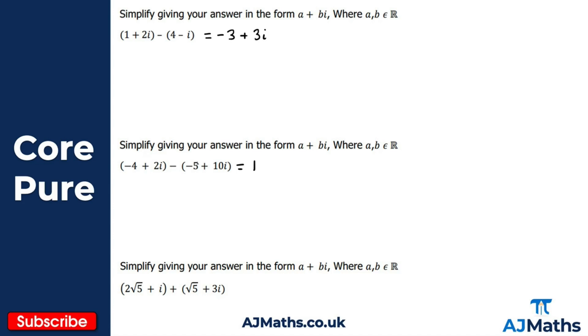And then for the final one here, again looks a little bit more complicated. We've got a surd now, but nothing too bad. I've got 2 root 5 plus root 5, so this is for the real part, that would give me 3 root 5. And then we've got i plus 3i, so i plus 3i would give us 4i there. And there we have it. So those are the solutions we should have got for these three practice questions.